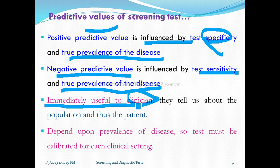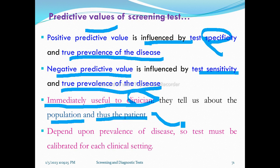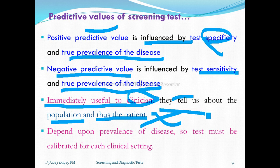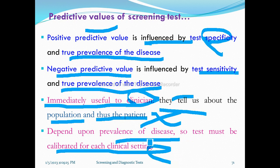Predictive values are clinically very important. They tell us about the population and the patient. They depend upon the prevalence of the disease, so the test must be calibrated for each clinical setting based on prevalence.